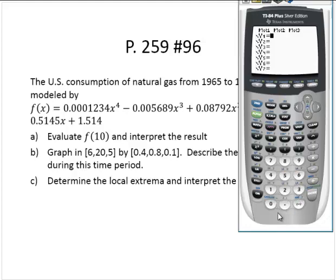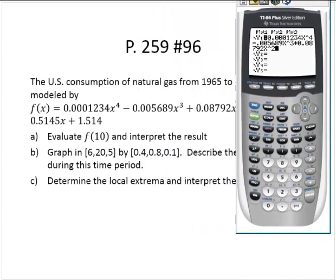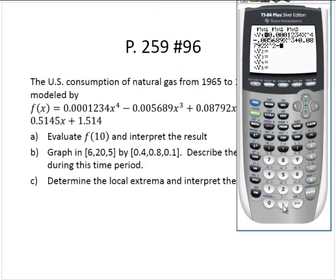So my y1, I'll type in 0.0001234x to the fourth minus 0.005689x to the third plus 0.08792x to the second. And then I can't remember if it's a plus or a minus there. It's a minus, minus 0.5145x plus 1.514.